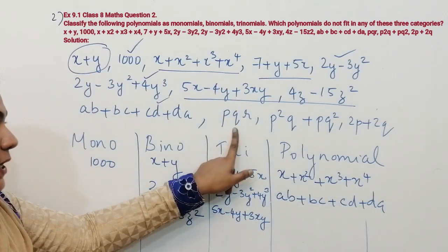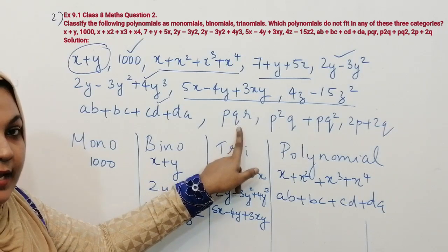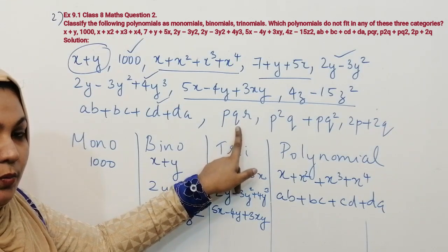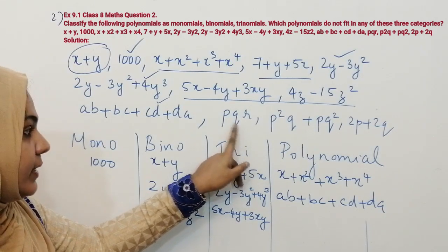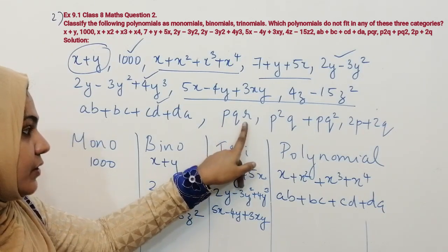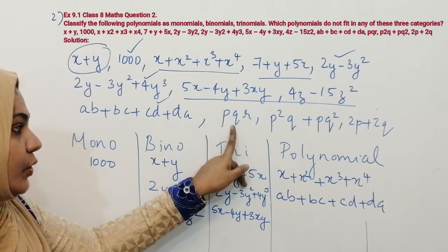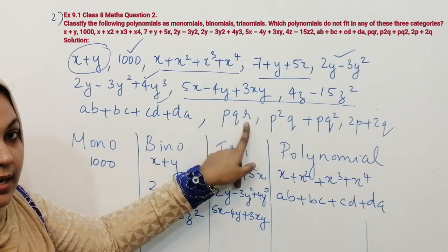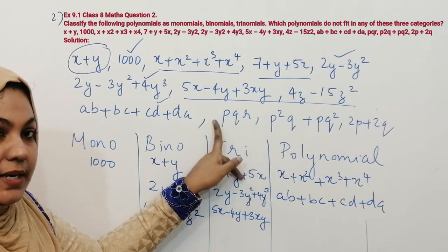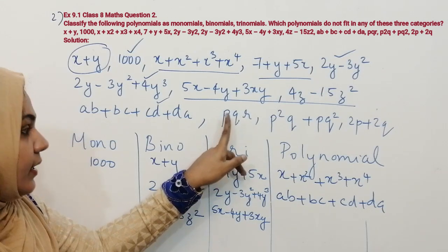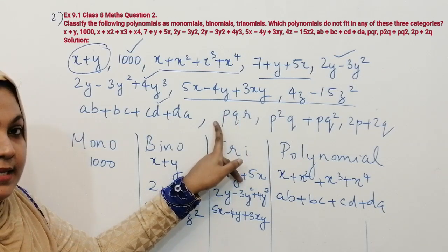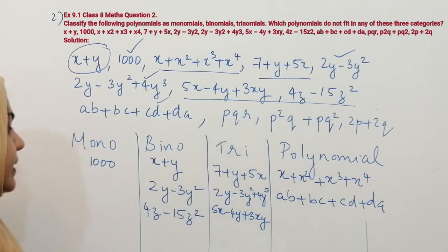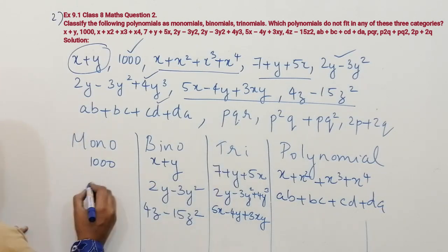The next one is pqr. This is a monomial — don't confuse it with a trinomial. This is multiplication format: p into q into r. There is no separation by an addition or minus sign, so this is a monomial.